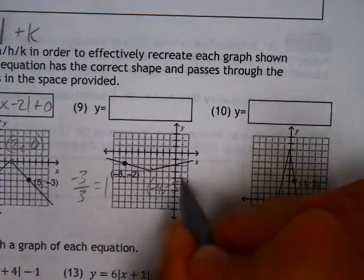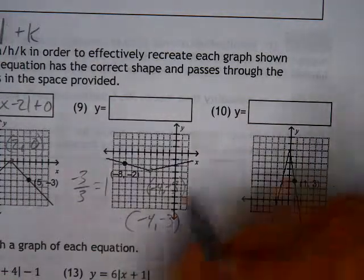Negative 4, negative 3, hard to see. Negative 4, negative 3, easier to see.